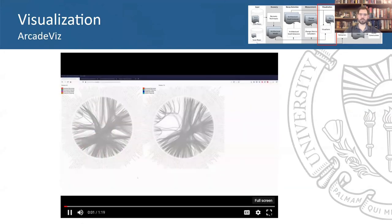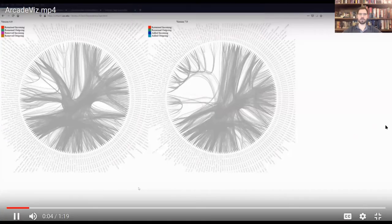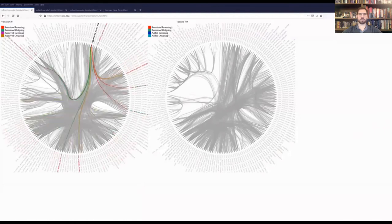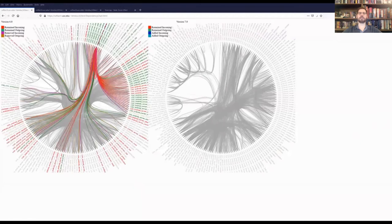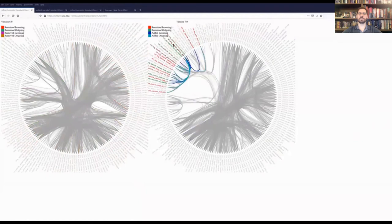The second visualization tool provided in Arcade is ArcadeVis, which focuses on decay and offers four different views: dependencies, smells, components, and interfaces. In the Dependencies view, one is able to hover over the names of individual components to see color-coded lines, representing incoming and outgoing, added and removed dependencies between two subsequent versions of the system.